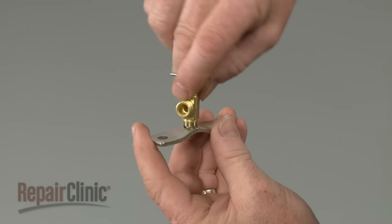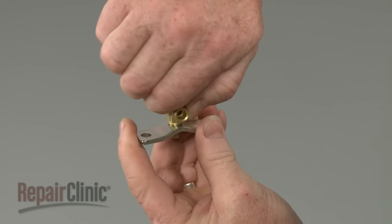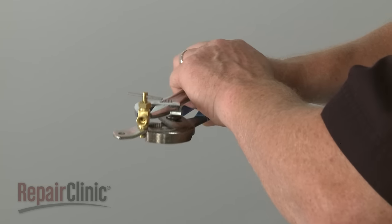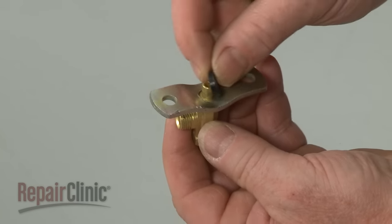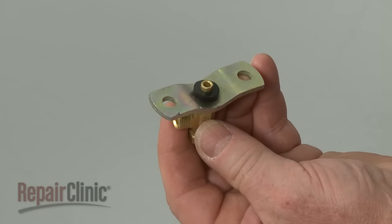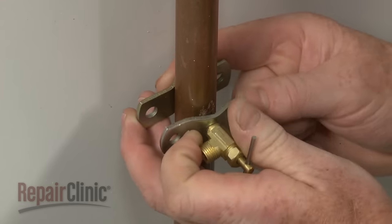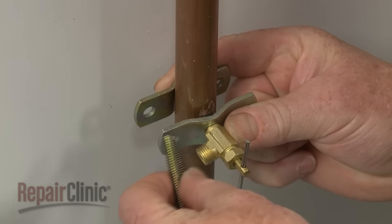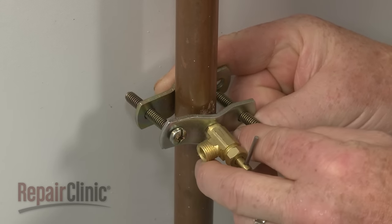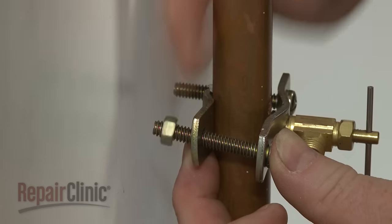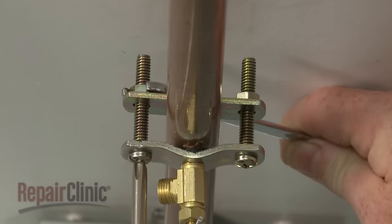Now thread the shut-off valve into the front pipe bracket and tighten by hand. Use a wrench to turn the valve an additional one-eighth turn to fully secure. Slide the rubber seal gasket over the shut-off valve's pilot tube. Insert the pilot tube into the hole in the water pipe. Position the rear pipe bracket, then insert the screws through the brackets and thread on the mounting nuts. Avoid over-tightening the nuts.